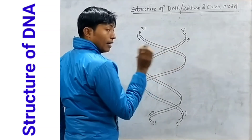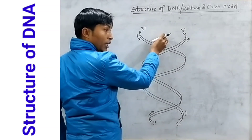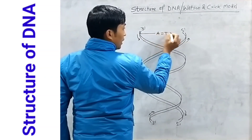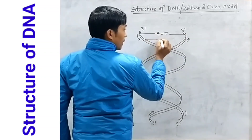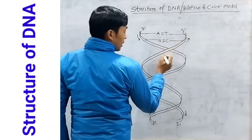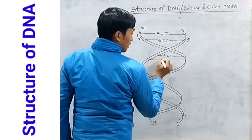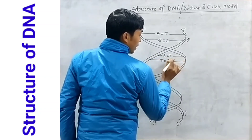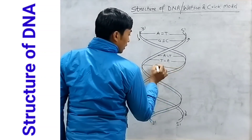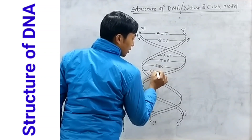Then fill the nitrogen bases on the inner side of the helix. Like this — A double bond T, and G triple bond C. Similarly, A double bond T, T double bond A, G triple bond C.